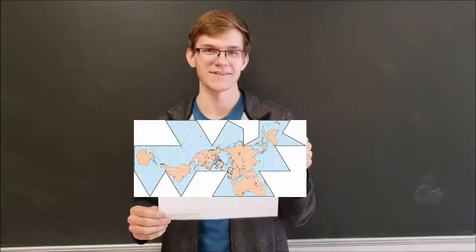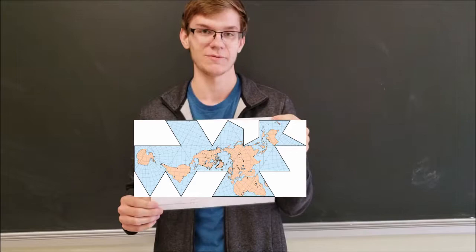This is the Dymaxion map. It preserves continent continuity and relative area, but by its shape it is not good for exploration. This explains why there are different types of maps that represent different properties of the globe.